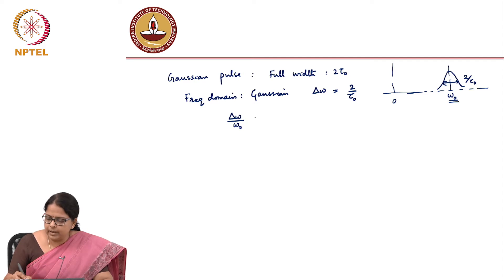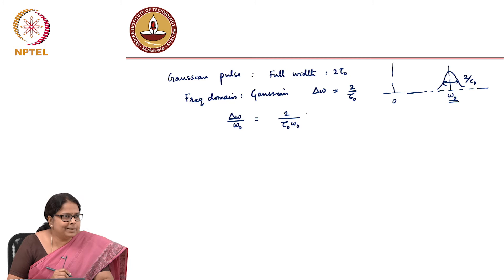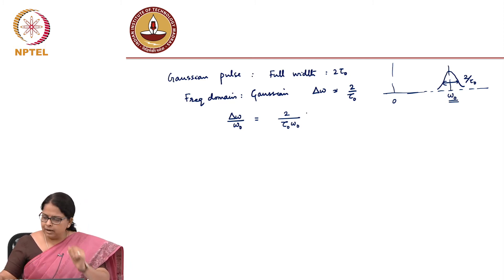So, this delta omega divided by omega naught is actually 2 by tau naught omega naught. Let us get some feel for the numbers. What spread are we talking about? If I have a spread in delta omega, how do I now convert as a spread in delta lambda?